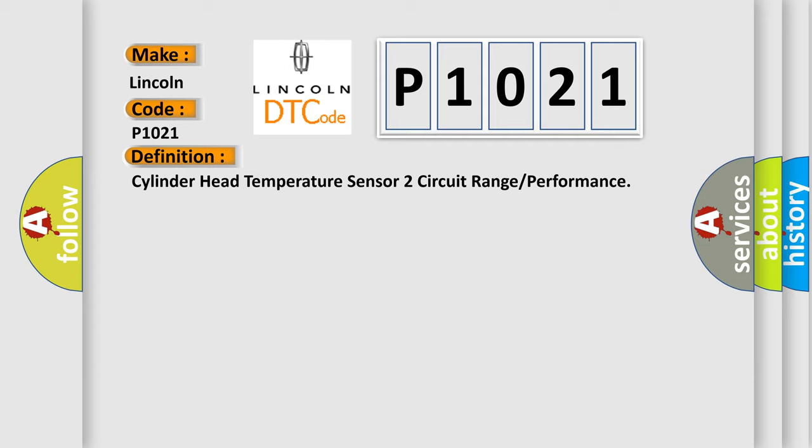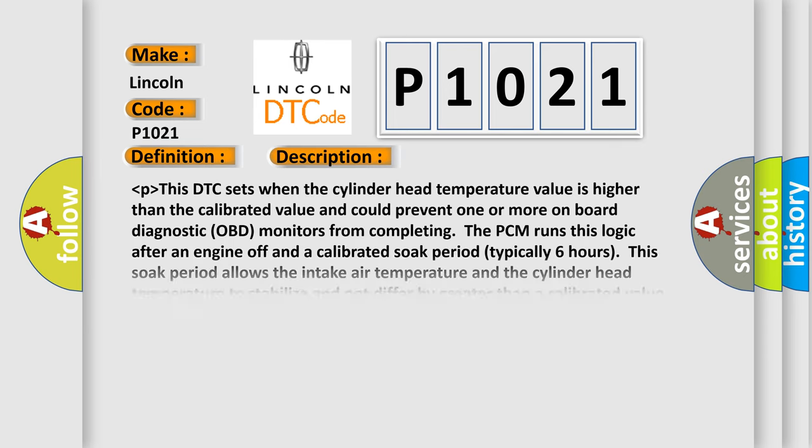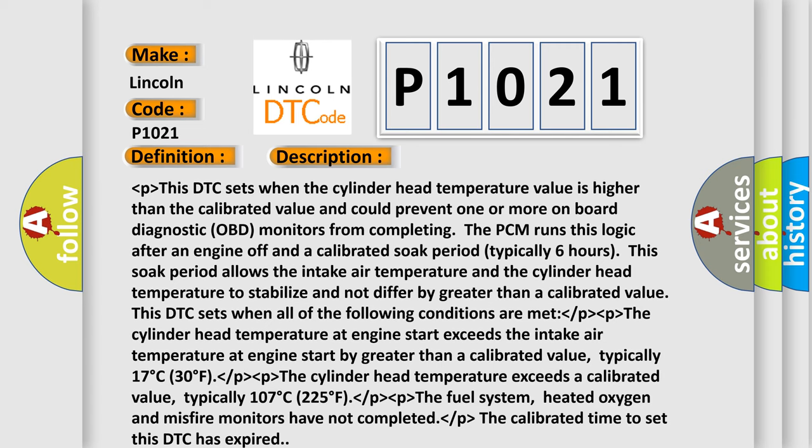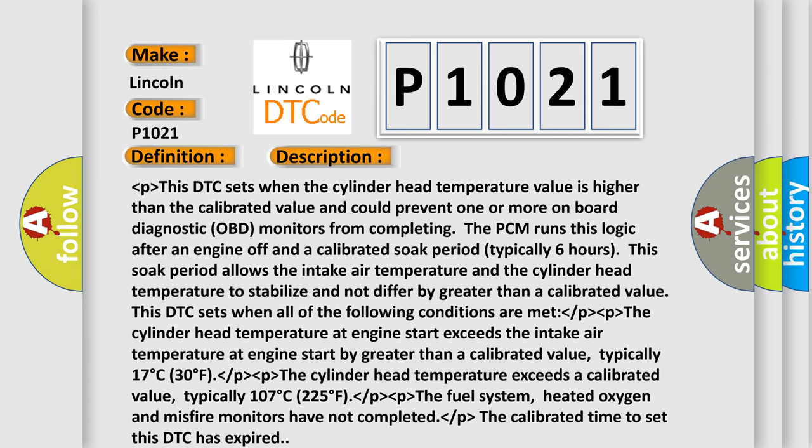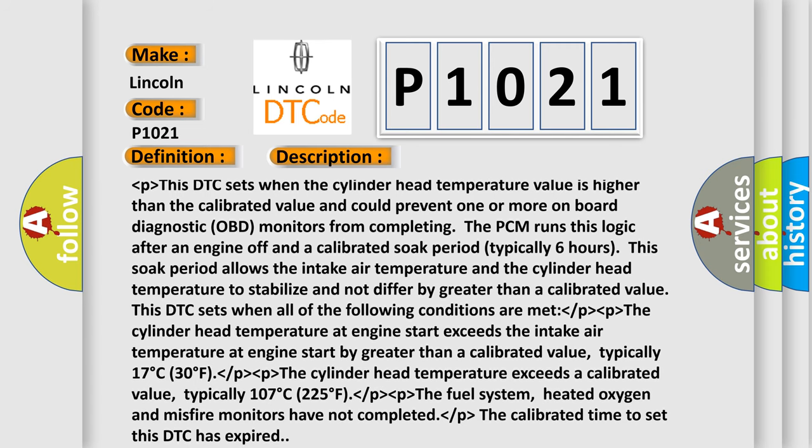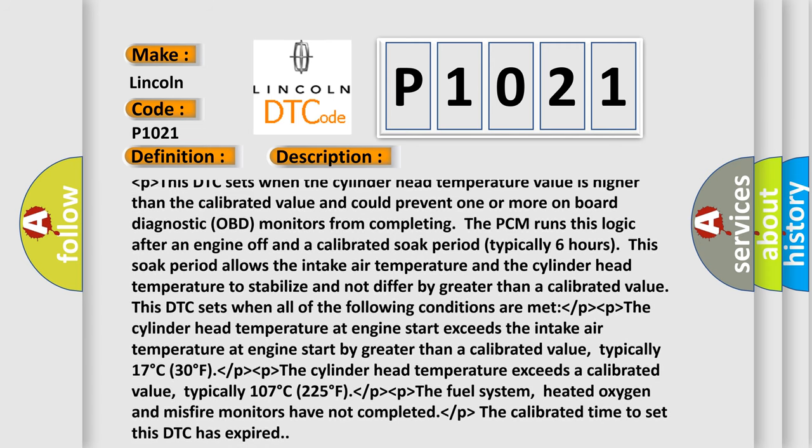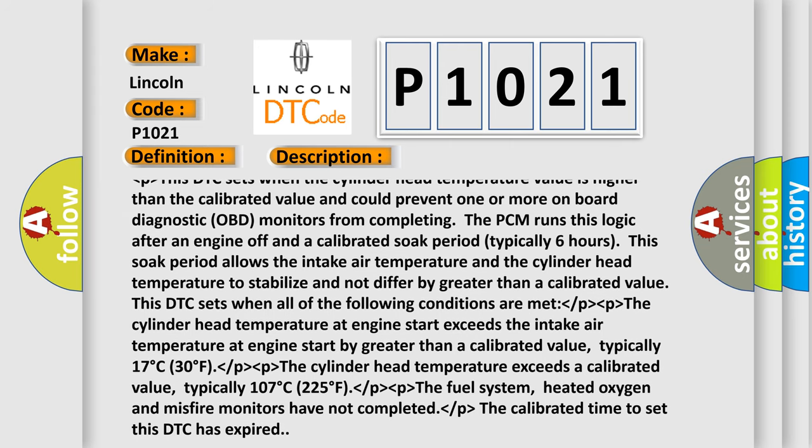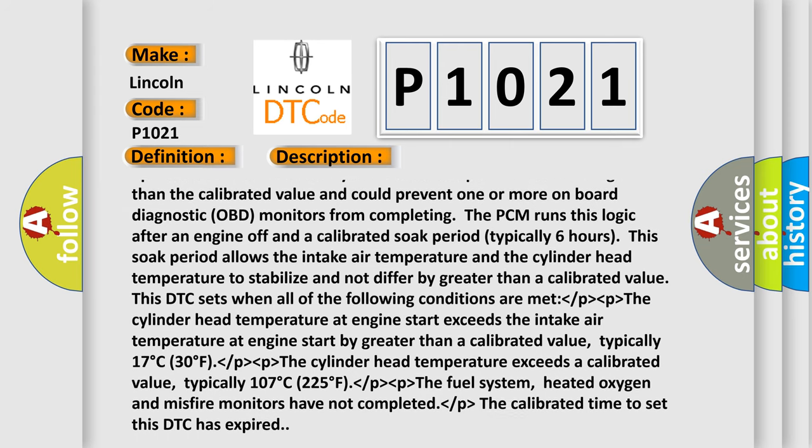And now this is a short description of this DTC code. This DTC sets when the cylinder head temperature value is higher than the calibrated value and could prevent one or more onboard diagnostic (OBD) monitors from completing. The PCM runs this logic after an engine off and a calibrated soak period, typically six hours.